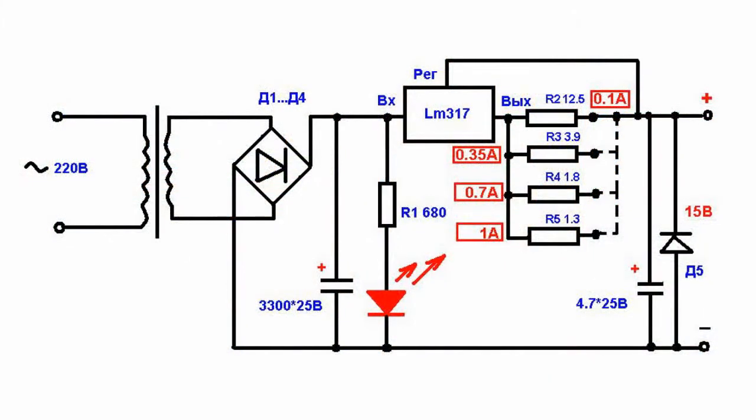Nowadays, linear stabilization of the current is especially popular. It is the basis of household power supply sources for LED lighting technology. A typical example is the use of the linear regulator LM317, with a wide range of output voltage and rated output current of 1.5 amperes.